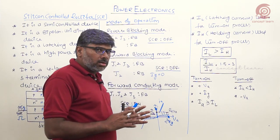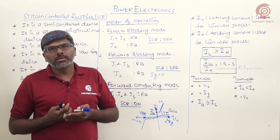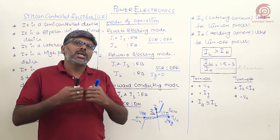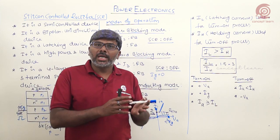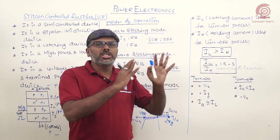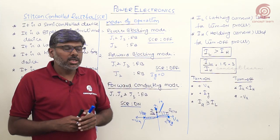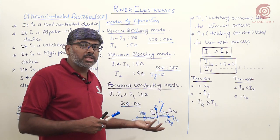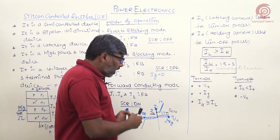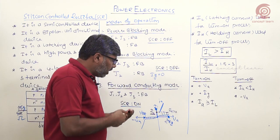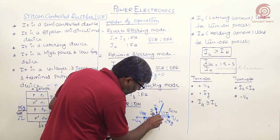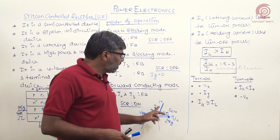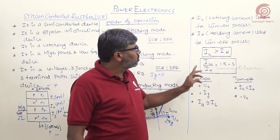Once SCR enters the latching state after gate signal application, the gate loses control over the anode circuit. If you remove the gate signal, SCR remains in the on state because it does not require the gate signal to sustain conduction. To turn SCR off, you must reduce the anode current below a specified minimum called the holding current IH. The latching current is used for turn on; the holding current is used for turn off.